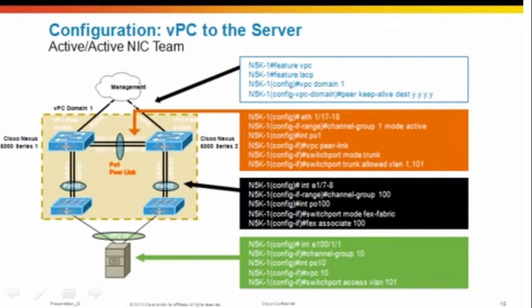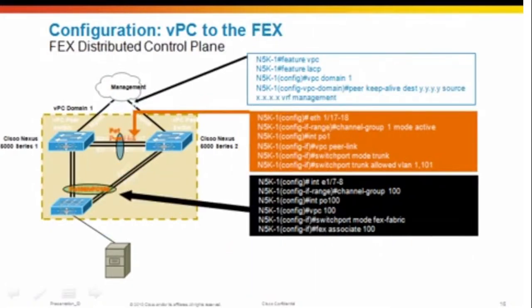Now let's talk about VPC to the FEX, where one FEX has links to each 5K so that in case of failure of one 5K, the FEX and connected servers maintain connectivity. The first two steps are the same: configure your VPC domain and peer keep-alive, and configure your peer link. The only difference is we configure VPC on the port channel that goes to the FEX, adding a VPC statement on both 5Ks. In this case, two cables go up to 5K1 and two go to 5K2, and on both 5Ks we call it VPC 100.